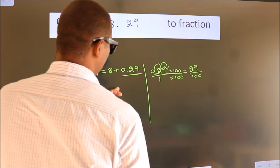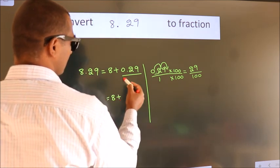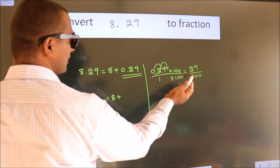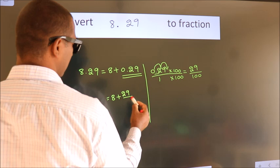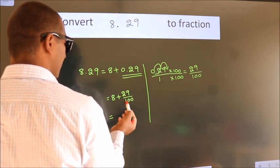Now here, 8 plus, in place of 0.29, we write this fraction: 29 by 100. 8 plus 29 by 100.